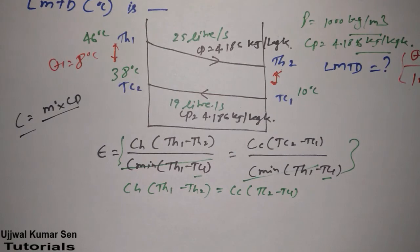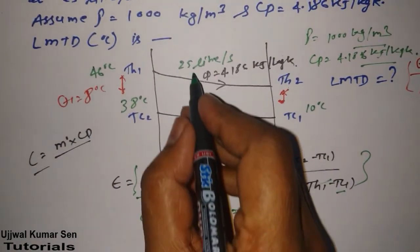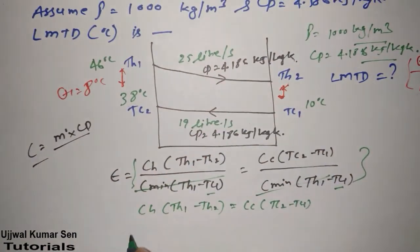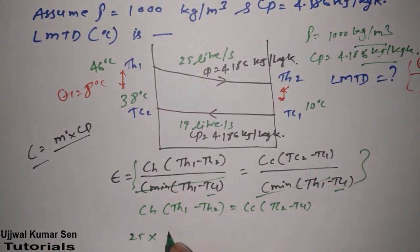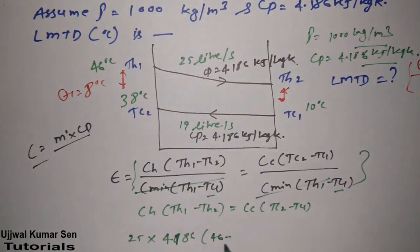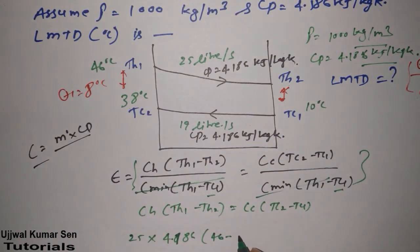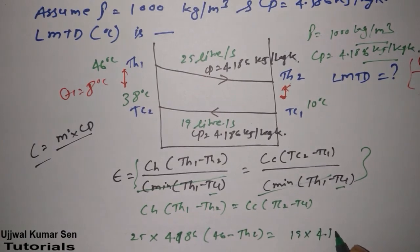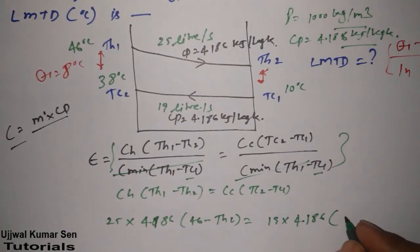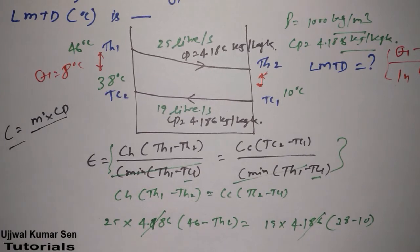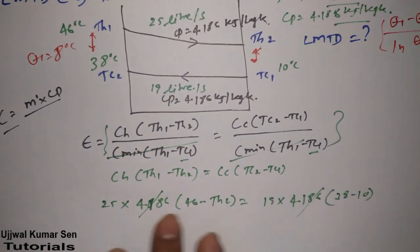So we don't know what is CH, we have to find out. So what is CH? Basically 25 multiple 4.186 times 46 minus TH2. And what is CC? 19 multiple 4.186 times 38 minus 10. So this one, this one get cancelled. You can easily see this, this one get cancelled.